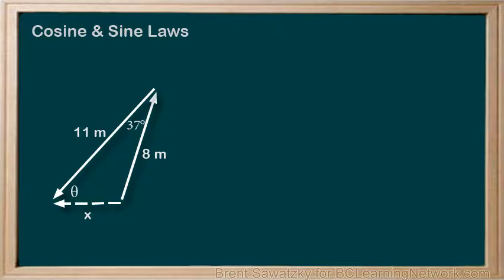We can see that this isn't a right triangle, so we can't use the standard trig ratios here. Thus, let's consider our cosine and sine laws. Let's solve for the length first. We're looking for a side where we know the angle opposite to this side, 37 degrees, and we also know the lengths of the other two sides, 11 meters and 8 meters. This aligns perfectly with the use of the cosine law.